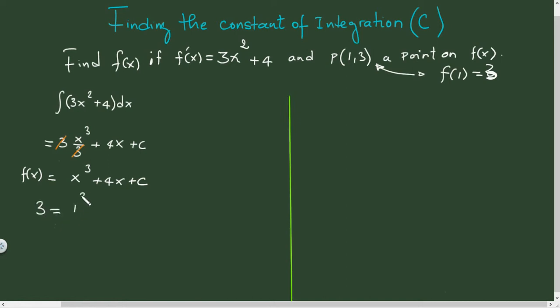to 1³ plus 4 times 1 plus C. So, and this here equals 5. Then we can say minus 5 on this side here and minus 5 over there. And we will definitely have C equals to minus 2.